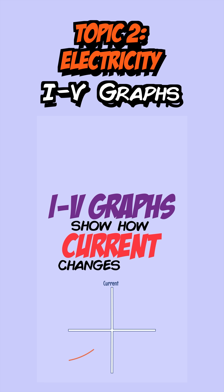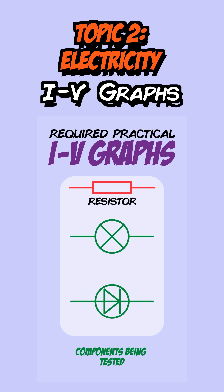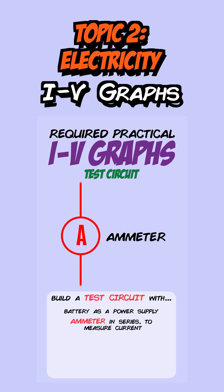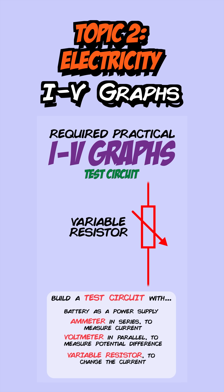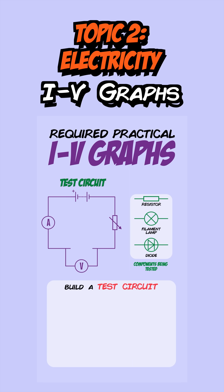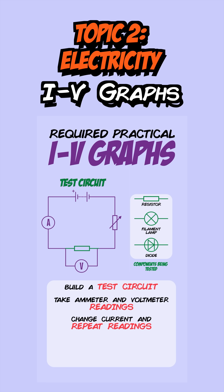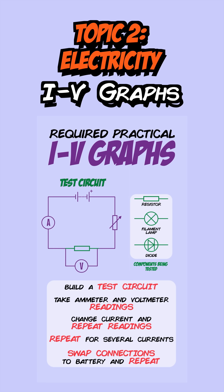An IV graph shows how current through a component changes with the potential difference applied to it, and you can carry out a practical to investigate this. The components tested are resistors, filament lamps and diodes. To test any of these, build a circuit with a battery, an ammeter connected in series to measure current, and a voltmeter connected in parallel to measure potential difference. You also need a variable resistor to change the current flowing through the circuit. Place the component being tested in, note down the ammeter and voltmeter readings, then alter the current and repeat for several different values. Swap the connections to the battery to reverse the current's direction and repeat the process, checking the component's behaviour in both directions.